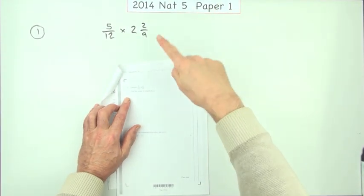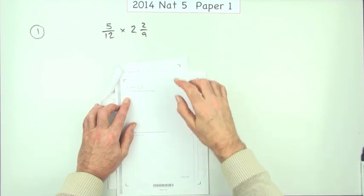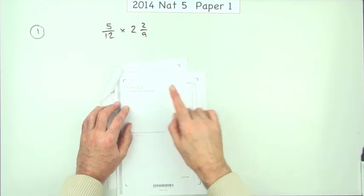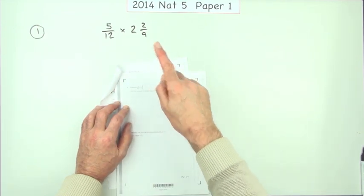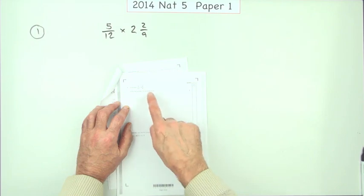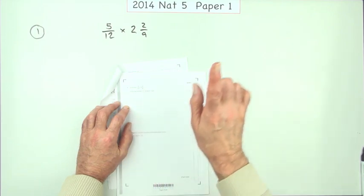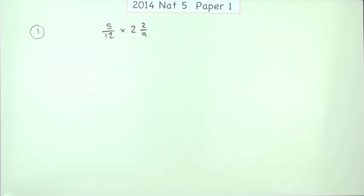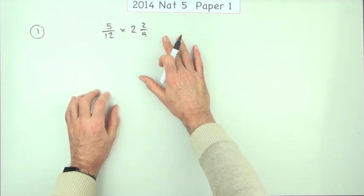Question 1 from the first paper of the 2014 National 5 exam: carry out this multiplication involving mixed numbers. Two marks, answer in simplest form, no calculator. Well, there's a couple of ways you can actually go about this.